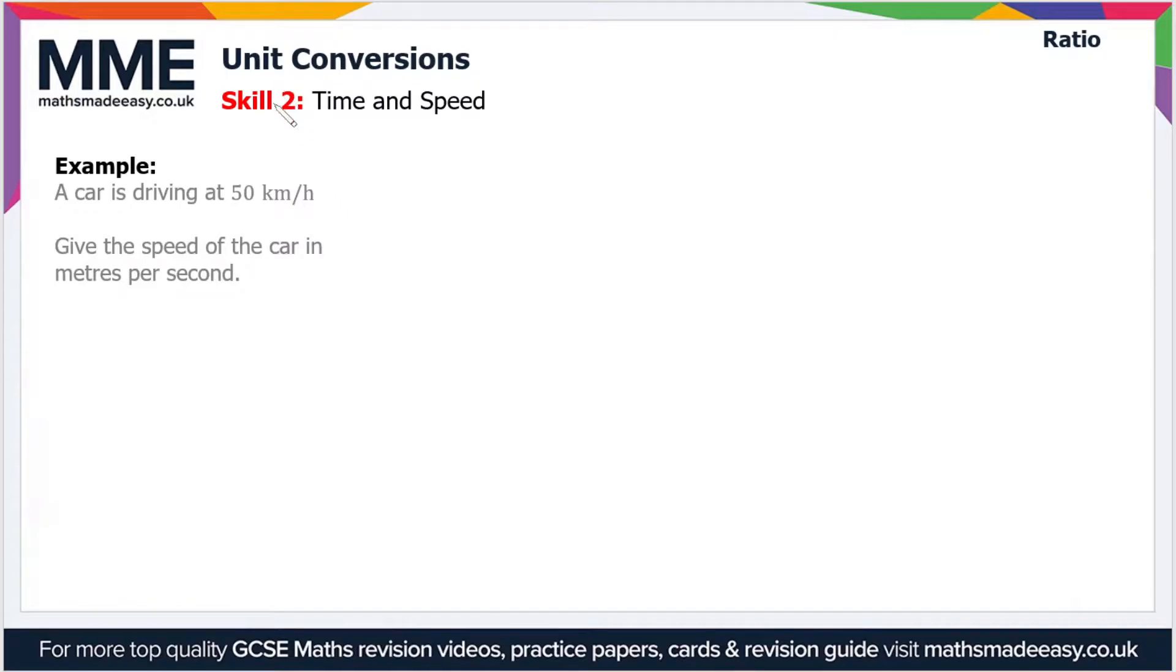This is a bit complicated because we've got two conversions to do. First of all, we have to convert kilometers into meters, and then we have to convert per hour into per second. So in one kilometer there's a thousand meters, and in one hour there are 60 minutes times 60 seconds, which is 3600 seconds.